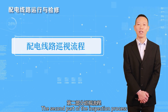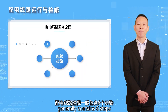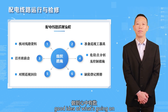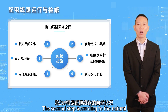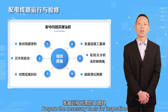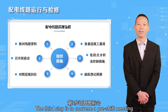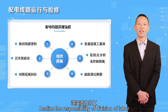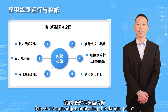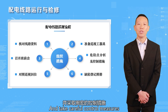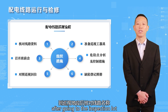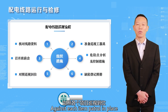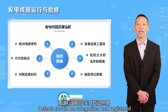Distribution line inspection generally contains six steps. Step 1: check the technical data of the inspection line to make sure you have a good understanding of conditions. Step 2: prepare the necessary tools for inspection according to the natural conditions of the line. Step 3: convene a pre-shift meeting to explain the scope and contents of inspection and assign responsibilities. Step 4: analyze the danger points and take careful control measures. Step 5: after arriving at the inspection site, confirm the line name and scope, patrol each item in place. After the final inspection, defects should be categorized and registered.